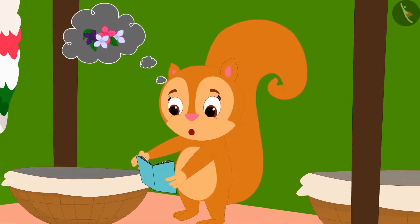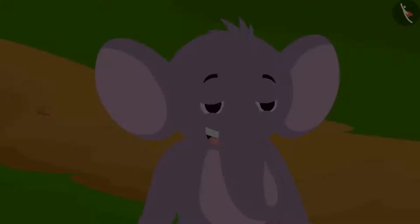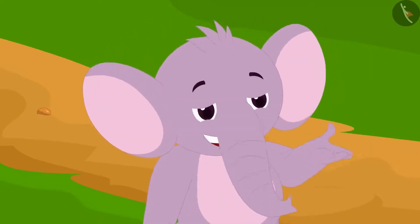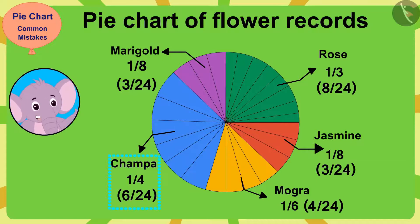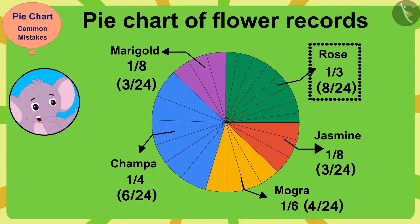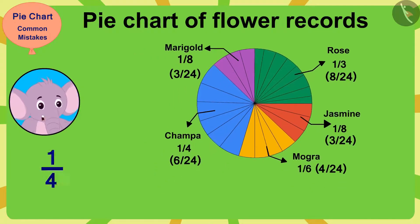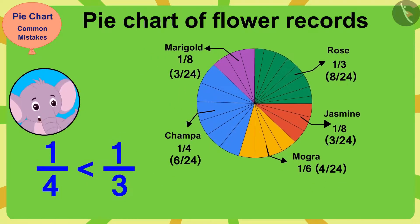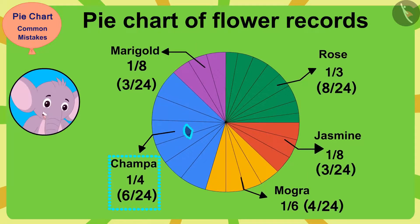Chanda proudly says, 'See, I have also learned to make pie charts.' Appu responds, 'Oh wow Chanda, you have made a very beautiful pie chart. But what's this? Champa flowers have been used in one-fourth of orders, and rose flowers have been used in one-third of orders. One-fourth is smaller than one-third. But in your pie chart, the one-fourth part of Champa flowers appears larger than the one-third part of rose flowers. How can this be possible?'